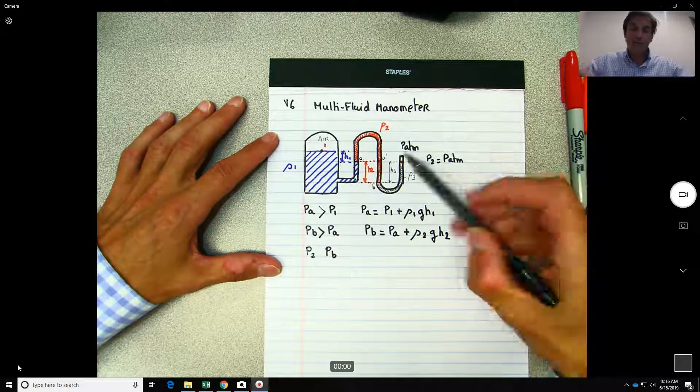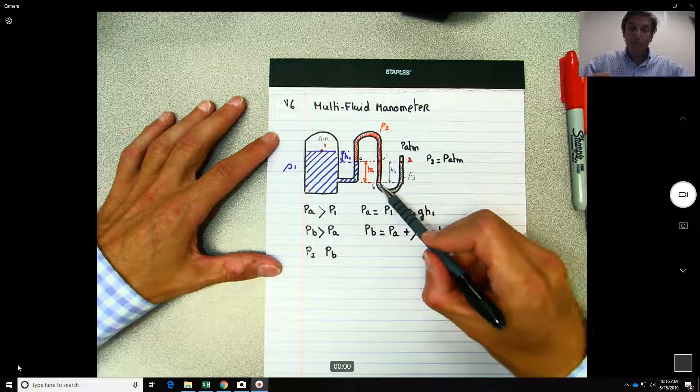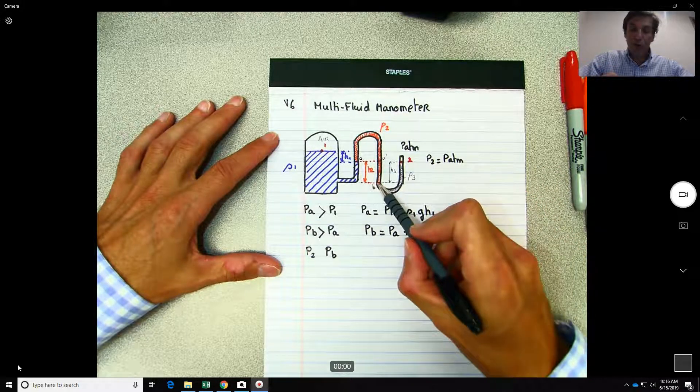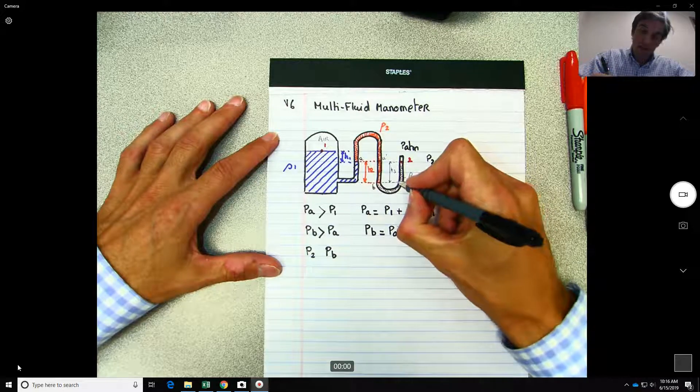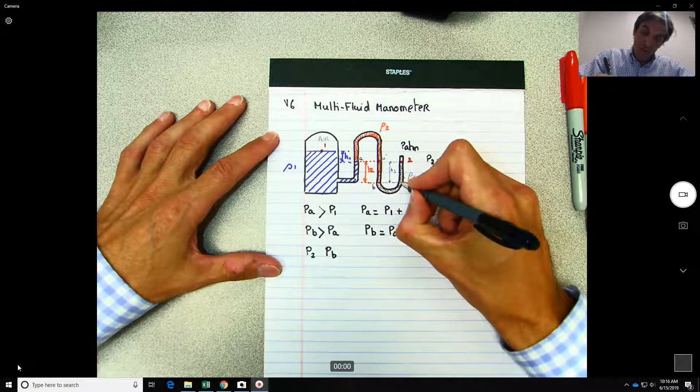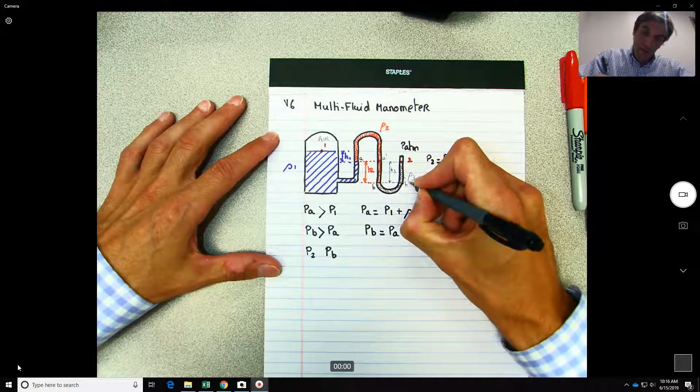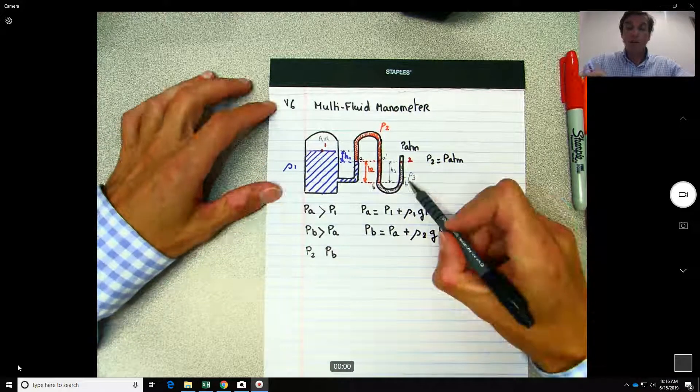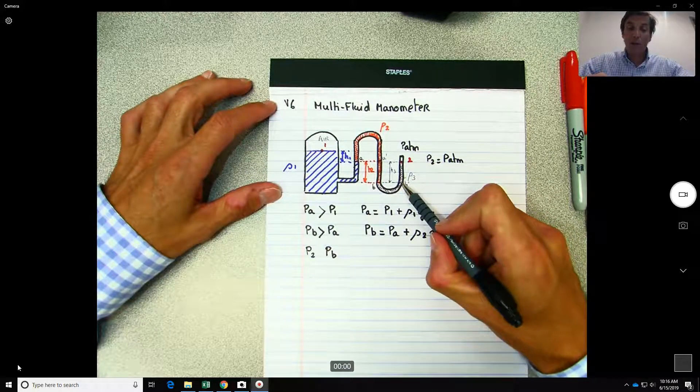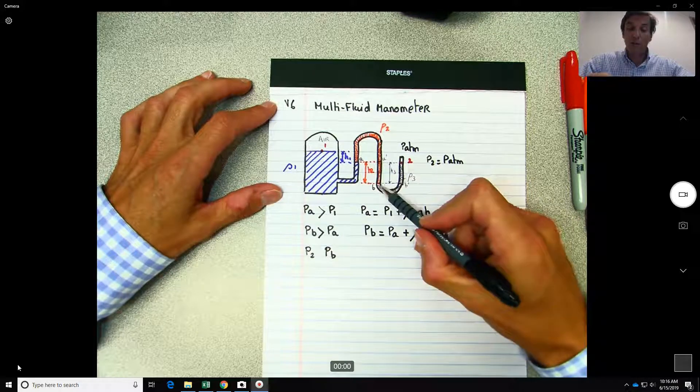So the pressure over here at point B, following the same criteria, should be the same as the pressure over here. But you agree that this point B prime will have a higher pressure because in addition to the pressure over here, it will be subjected to the pressure created by this fluid on top of it.